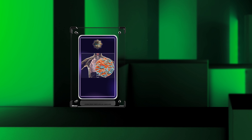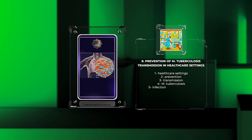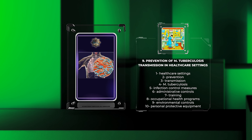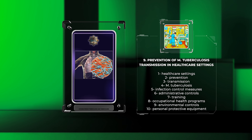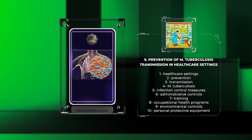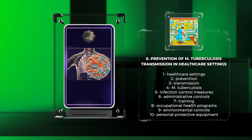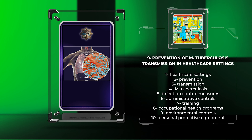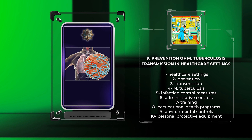In healthcare settings, it is important to prevent the transmission of Mycobacterium tuberculosis. This involves implementing infection control measures, like administrative controls, training, occupational health programs, environmental controls, and personal protective equipment for healthcare workers and patients.